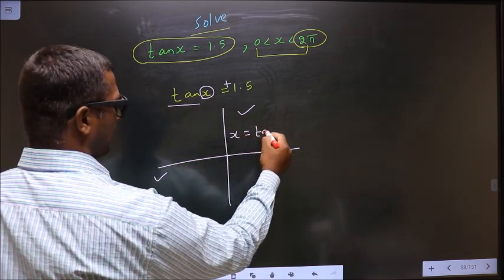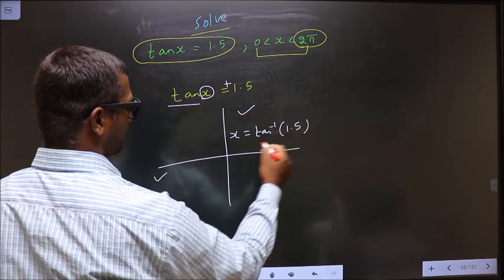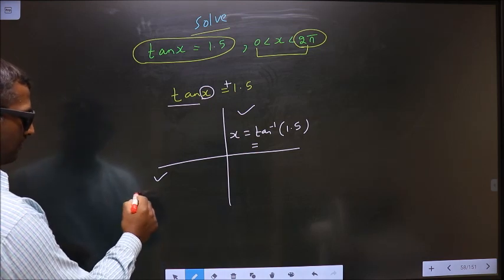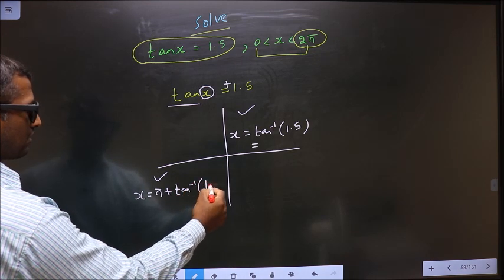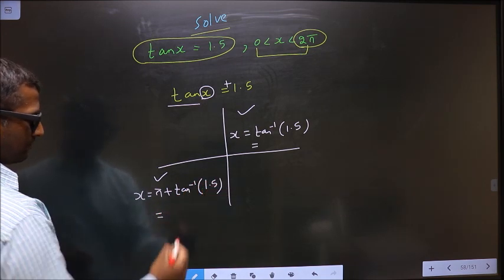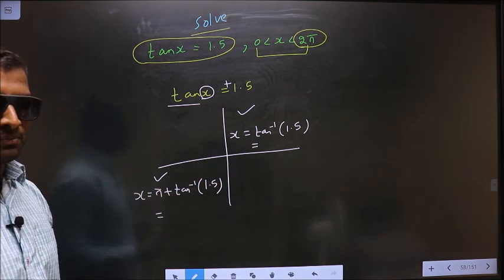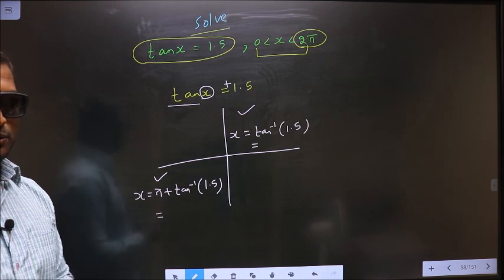To get an angle in the third, we should do π plus tan inverse 1.5. Now before you calculate these two, make sure your calculator is in radians mode.